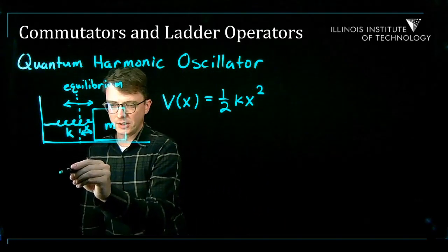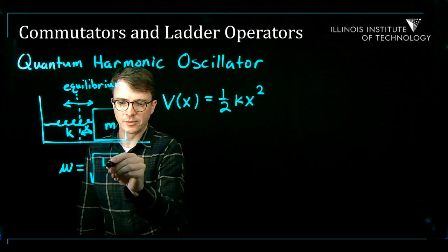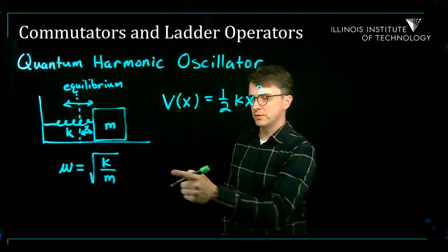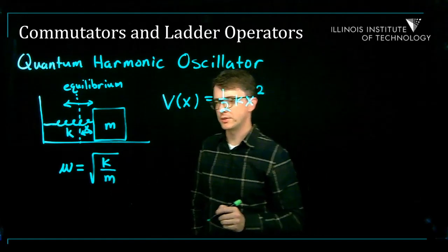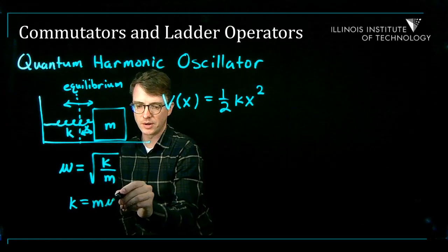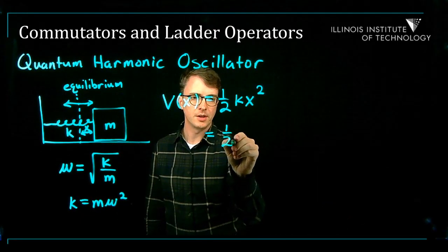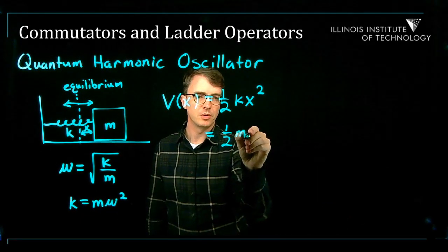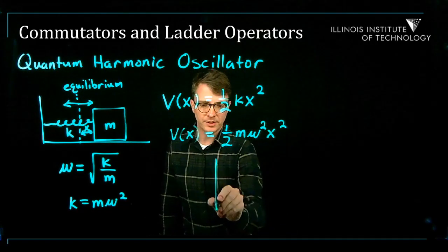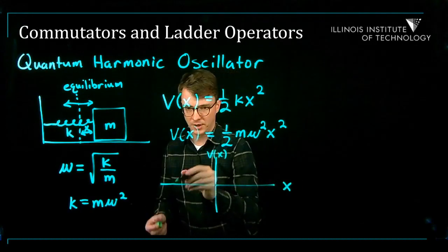The angular frequency omega is the square root of k over m. Solving for k gives k equals m omega squared, so we can write the potential as one-half m omega squared x squared. If I were to graph this potential, it would be a quadratic.